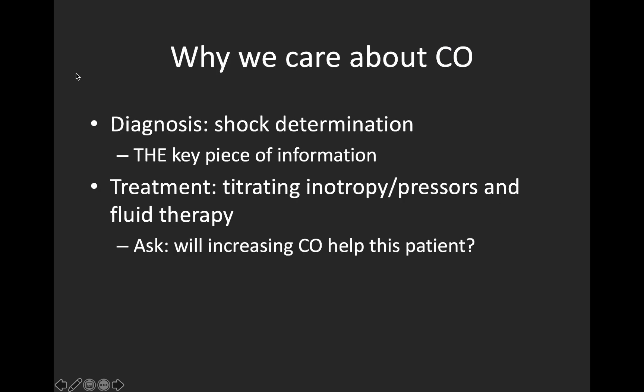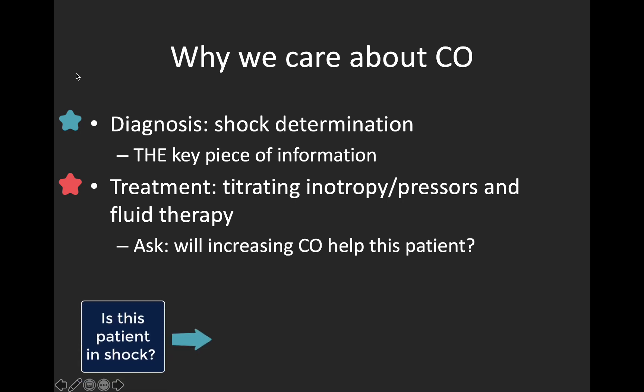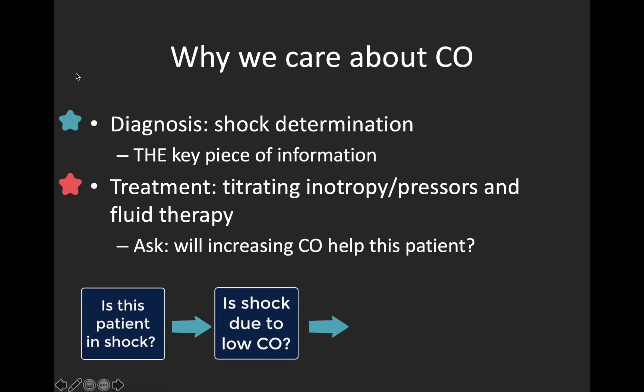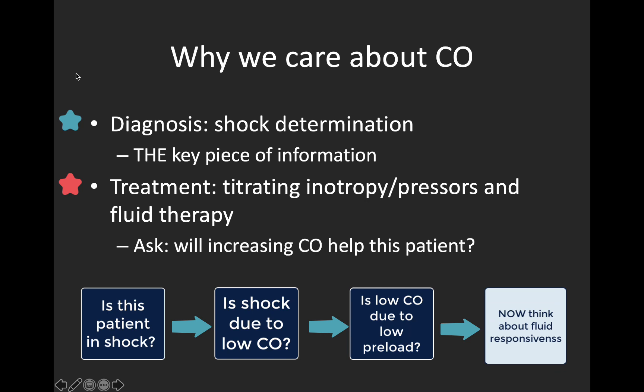Cardiac output is a key piece of information in the diagnosis of undifferentiated shock, and it can also be really helpful in the choice and titration of therapies — for example, selection and titration of inotropy for a patient in cardiogenic shock. It's also useful when thinking about fluids to augment cardiac output. Sometimes it's worth stepping back and thinking about the physiology, as septic shock patients often have a supernormal cardiac output already, since their problem isn't cardiac output but rather very low systemic vascular resistance — vasodilatory shock. In those cases, the benefit of additional fluid is questionable.